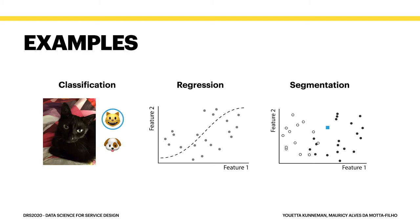Regression is another example, which aims at finding and estimating relations between dependent and independent variables — for example, the relation between the amount of sunlight and the increase in sickleaf. With segmentation, also called clustering, the technique divides instances into meaningful groups based on distinctive features without predefining the group features. We'll see more examples later in the presentation.